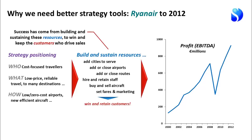What has been happening is that success has come from building and sustaining quite specific resources to win and keep the customers who drive the sales. Building resources means: they add cities to serve, add or close airports, add or close routes, hire and retain staff, buy and sell aircraft, and set fares and marketing. All of those things have to happen and happen well to win and retain the customers to deliver profit growth.